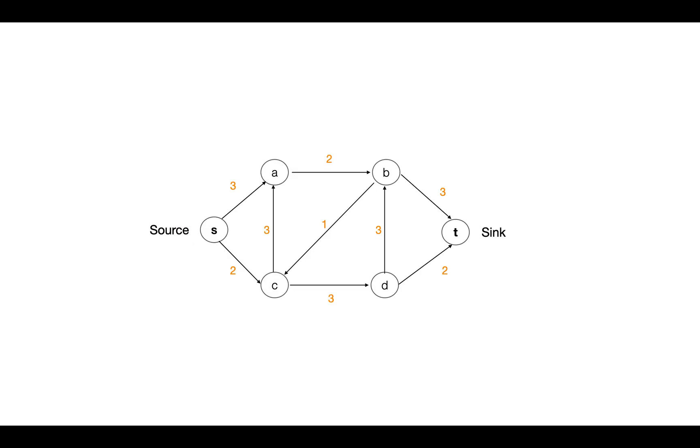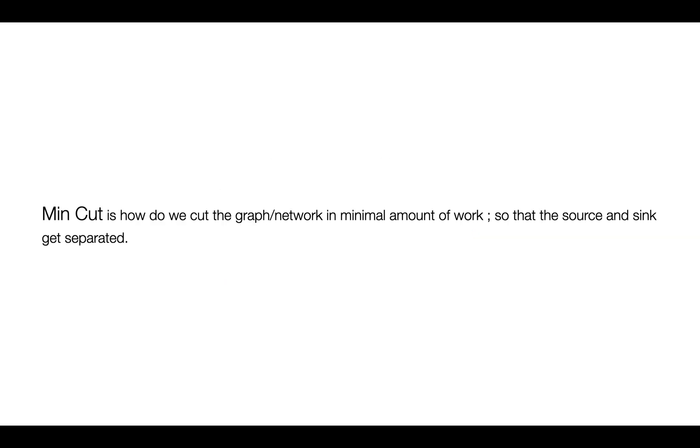The max flow problem is about finding the maximum amount of flow we can get through the graph. The min cut problem is about how to cut the graph efficiently with minimal work so that the source and sink get separated, meaning there is no path left from source to sink.